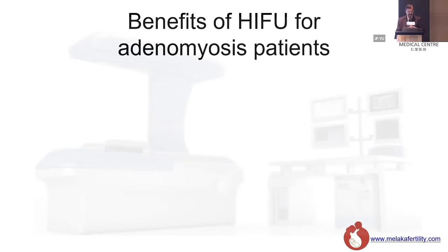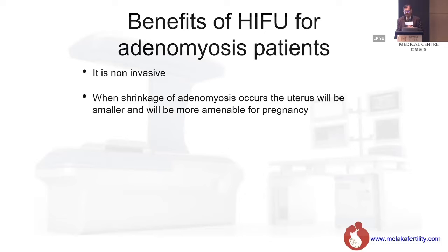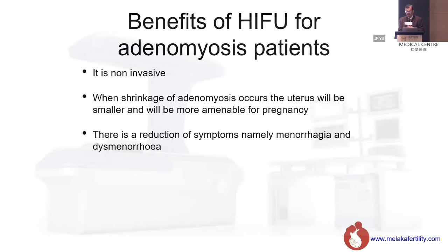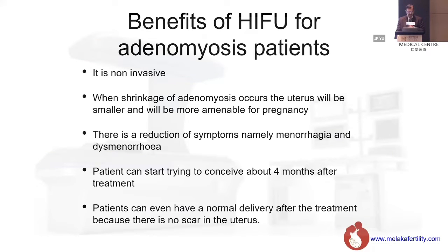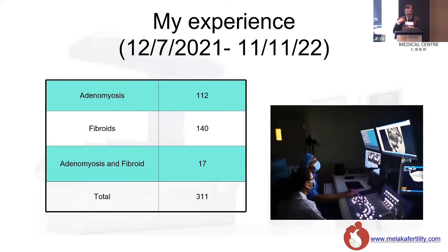What about HIFU? The benefits are that it is non-invasive. Shrinkage of adenomyosis makes the uterus smaller and more amenable for pregnancy. There is reduction of symptoms — menorrhagia and dysmenorrhea. The patient can start trying to conceive after about four months of treatment, and can even have a normal delivery because there is no scar in the uterus. I've done 311 cases over 16 months, of which about 112 are adenomyosis and the rest fibroids and adenomyosis combined.